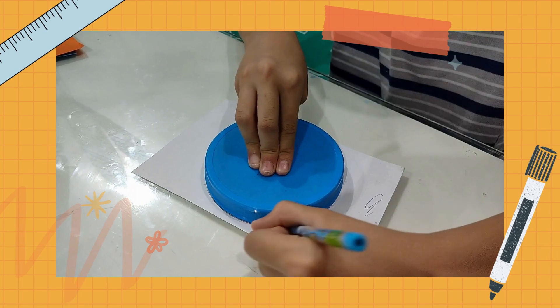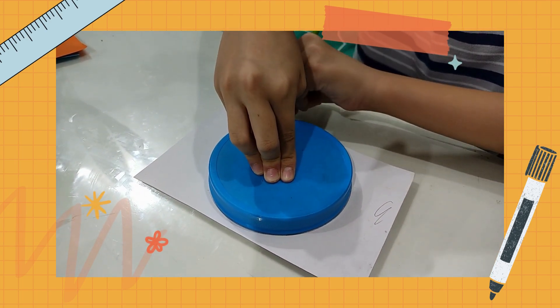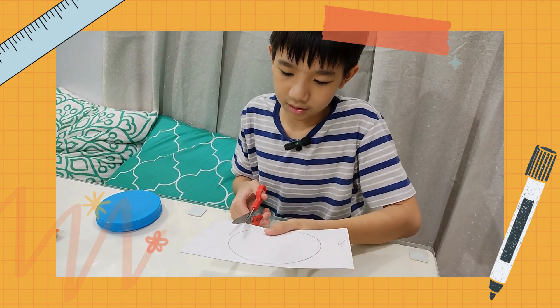First, trace the bigger circle on the cardboard and cut it out.